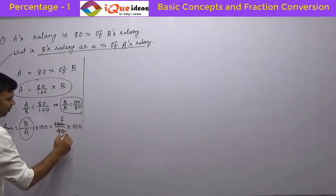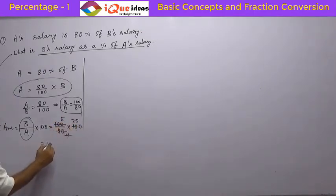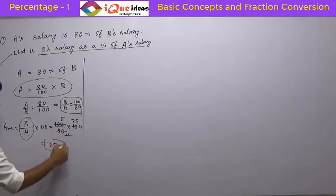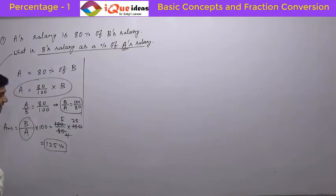So 25 times, 24 times, 4 cancels 100, 25 times, 5 to 25 is 125%. So that means we say that B's salary is 125% of A's salary.